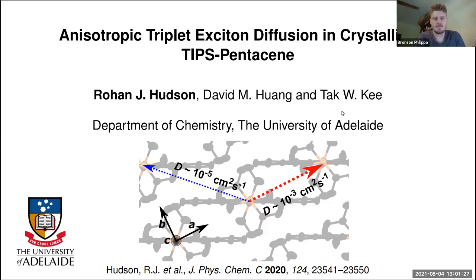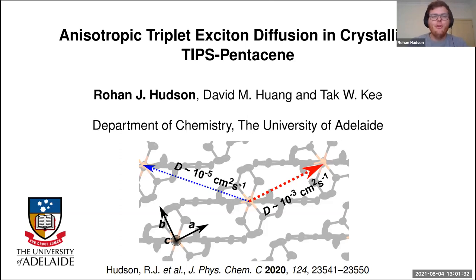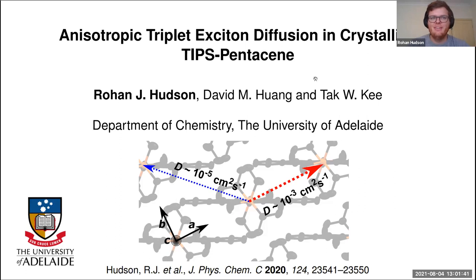Thank you Bronson. So to those who don't know me, my name is Rowan. I'm a PhD student working at the University of Adelaide with David Huang and Taki, and today I'm going to be talking about some of my PhD research looking at quantifying the anisotropy in triplet exciton diffusion within crystalline TIPS pentacene.